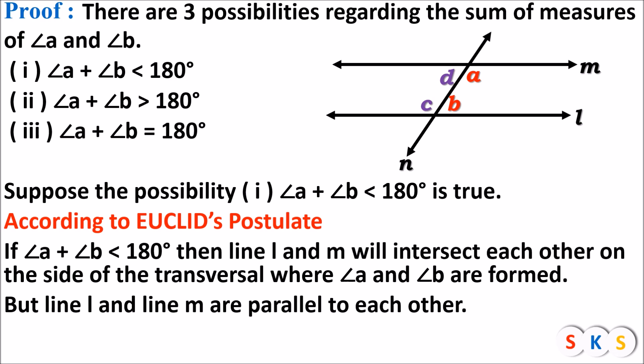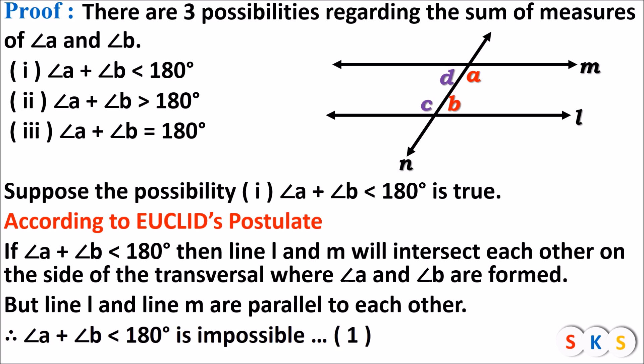When we consider angle A plus angle B is less than 180 degrees, both lines intersect each other. Our consideration is incorrect, because it goes against the given — the given states line L is parallel to line M, but we are getting that line L and line M are not parallel. Therefore angle A plus angle B less than 180 degrees is impossible. This is equation number one.